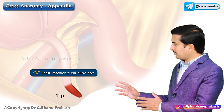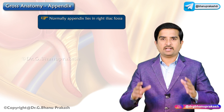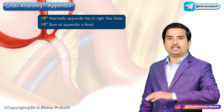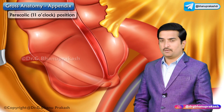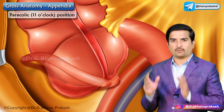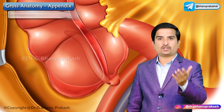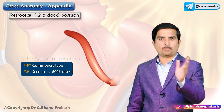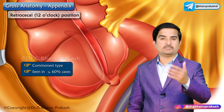The tip of the appendix is the least vascular, distal, and blind end, directed in various directions. Normally, the appendix lies in the right iliac fossa; the base is always fixed while the tip can point in different positions. The first is the paracolic position, also called the 11 o'clock position, where the appendix lies below the cecum and the tip ascends on the right side of the ascending colon — seen in about 2% of cases. The second is the retrocecal position, or 12 o'clock position, the commonest type, seen in greater than 60% of cases, where the appendix passes retroperitoneally behind the cecum and ascending colon.